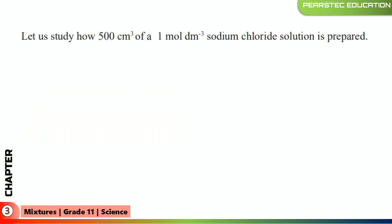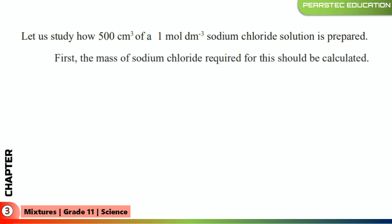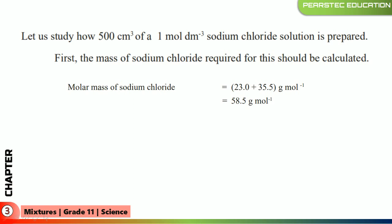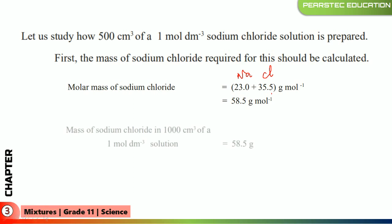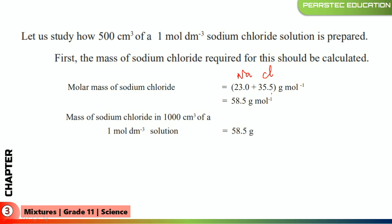Now let us study how to prepare 500 cubic centimeters of a 1 mol per cubic decimeter sodium chloride solution. First, the mass of sodium chloride required must be calculated. The molar mass of sodium chloride — sodium plus chloride — comes to 58.5 grams per mole.